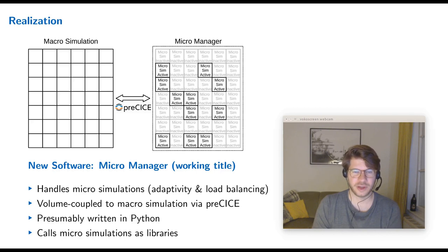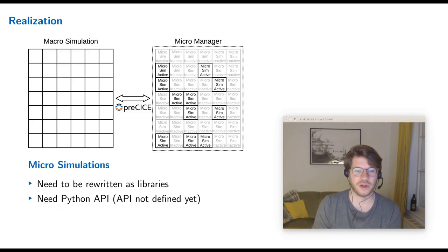So let's look at the same thing, but now from the perspective of the micro simulations. The micro simulations need to be rewritten as libraries. That means they need to get an API. And that API now needs to be in Python. So that means that either the complete micro simulation needs to be in Python, or the micro code needs to have bindings in Python.